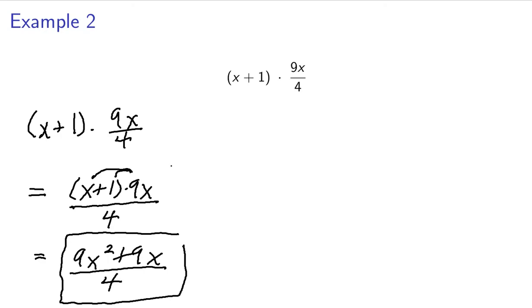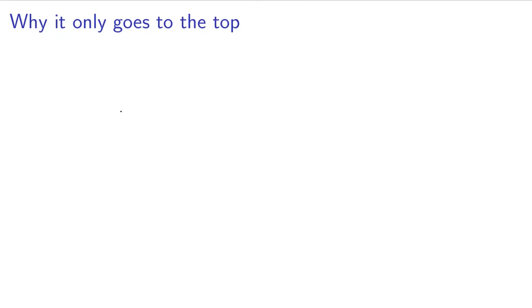So now let's go ahead and talk about why it only goes to the top. Now this is going to get just a little bit into theory, but it's worth talking about. So when we have, for example, 21 over 3. Now, of course, we could simplify that, but just going into more detail, what this actually means is 21 times 1 third.